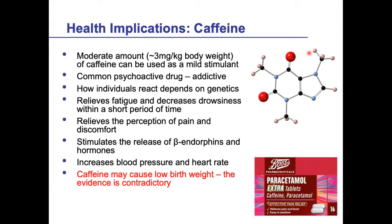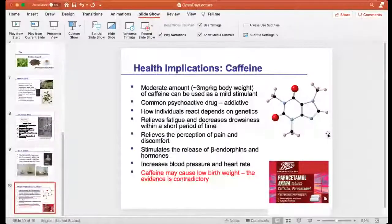Caffeine has various known properties: it keeps you awake, decreases drowsiness, relieves fatigue, and can also relieve the perception of pain — which is why caffeine is sometimes included in paracetamol tablets. It stimulates the release of certain endorphins and hormones, and increases your blood pressure and heart rate. However, it also has some negative impacts: it has been linked to low birth weight for mothers who consume a lot of caffeine, though the evidence is contradictory. That was just a brief outline of the tea lecture — a small part of it — but I hope it gives you an idea of the kind of work we'll be doing in the first year and the kind of research I'm involved with.